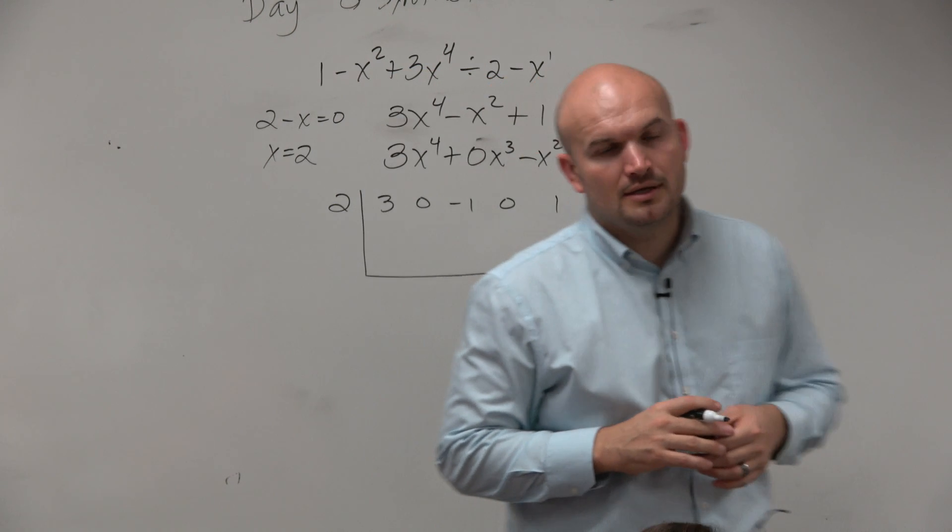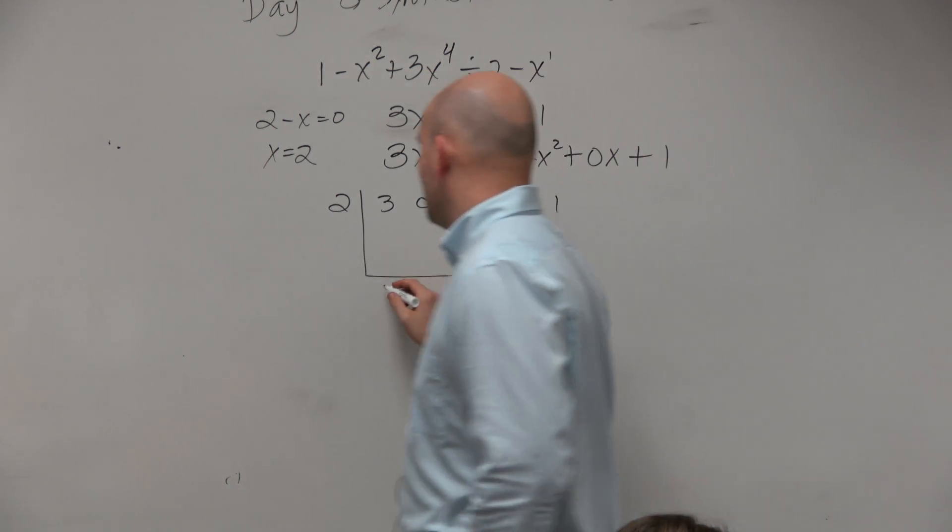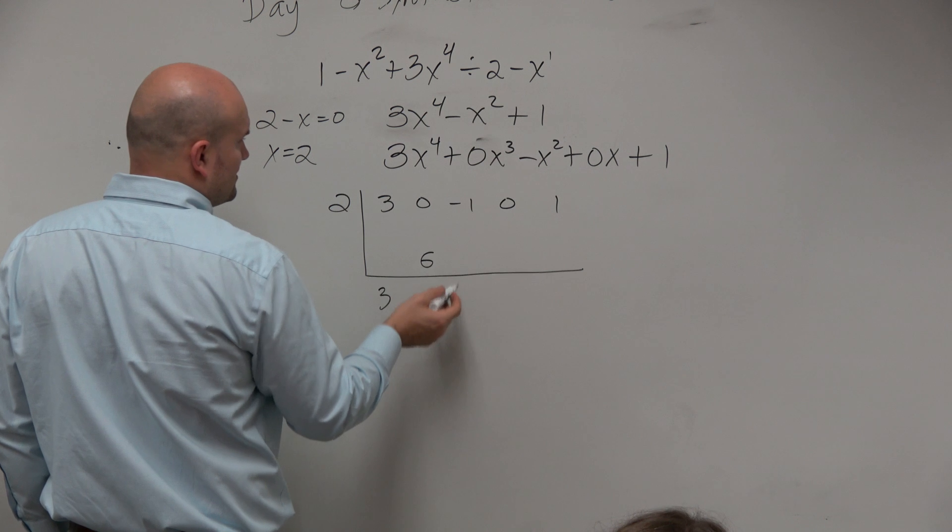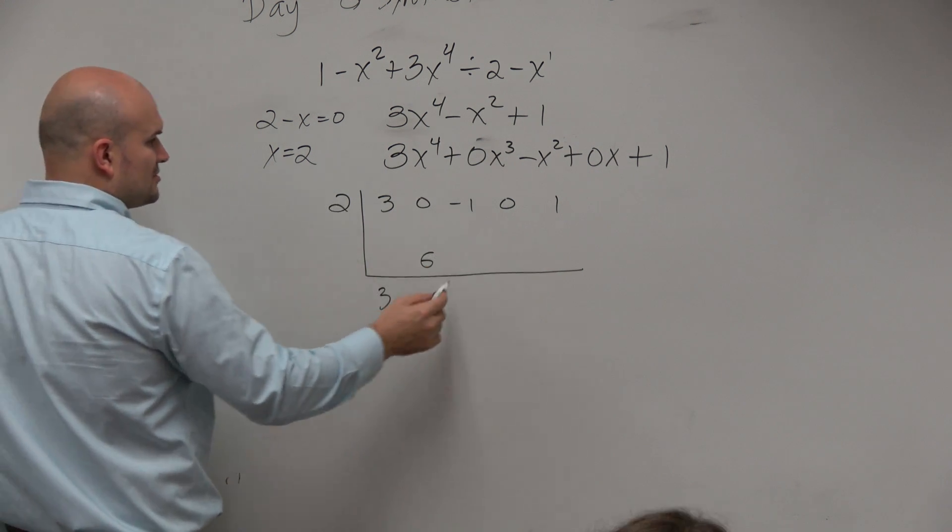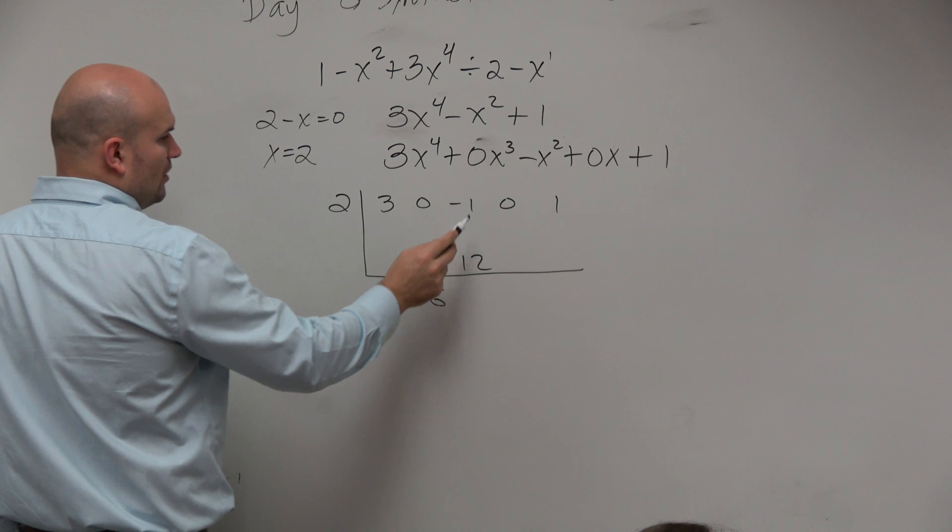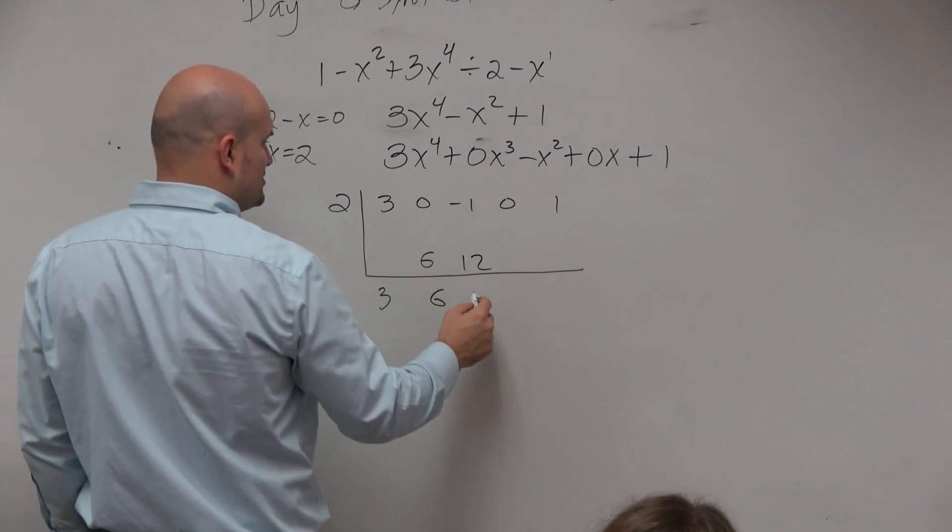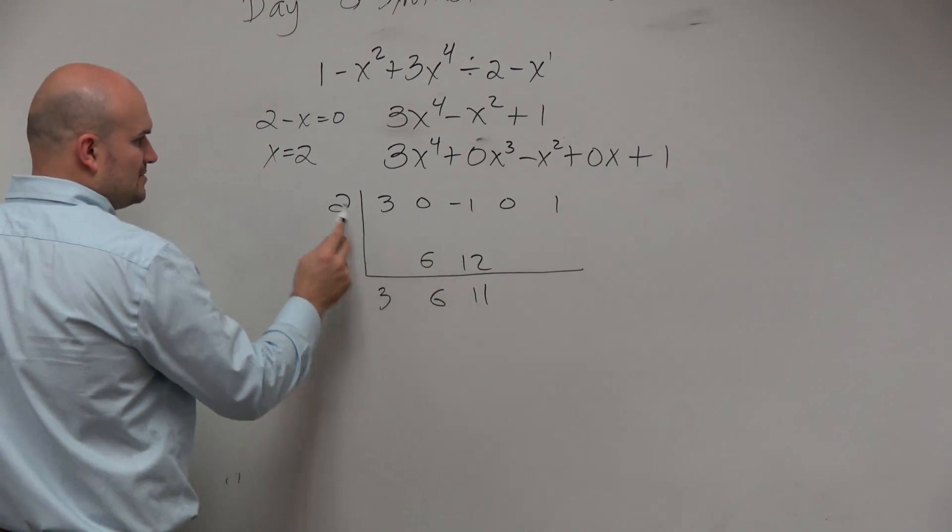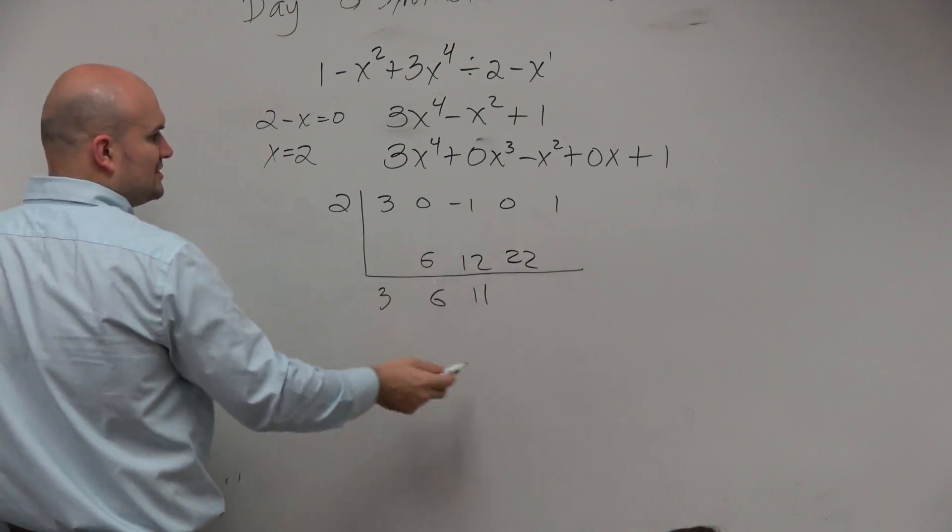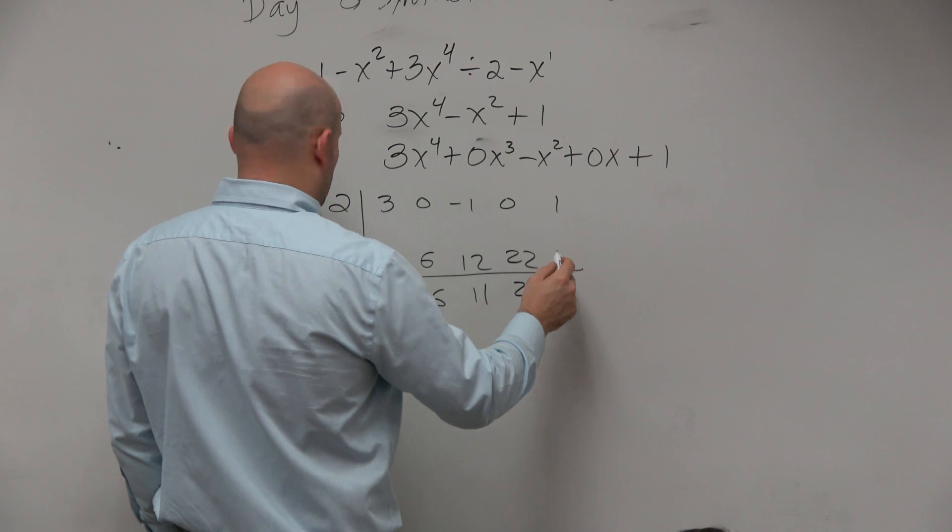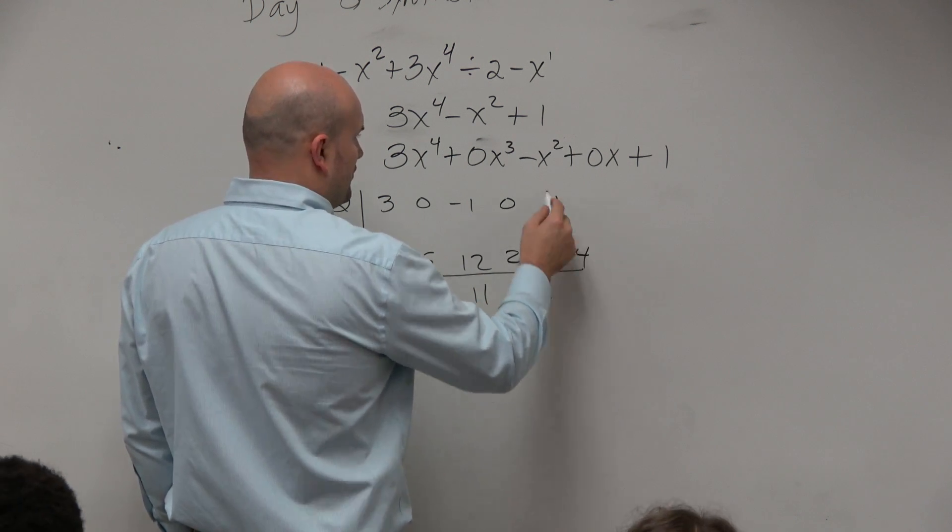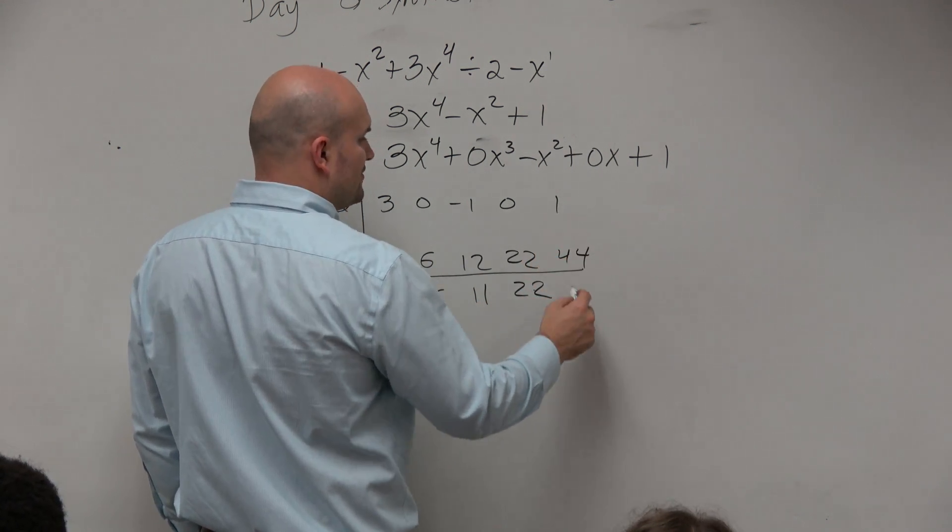So now we just bring down the 3, 3 times 2 is going to be a 6, 0 plus 6 is 6, 6 times 2 is going to be 12, negative 1 plus 12 is going to be 11, 11 times 2 is 22, 0 plus 22 is 22, 22 times 2 is 44, 44 plus 1 is 45.